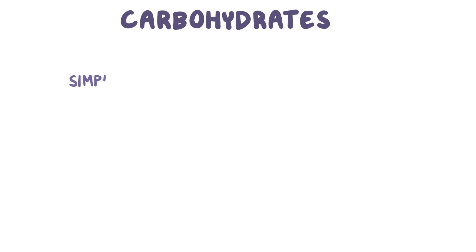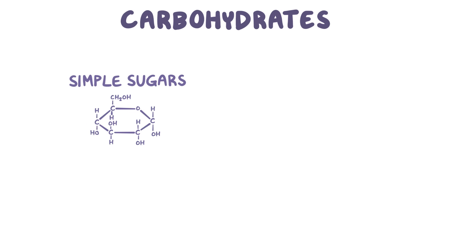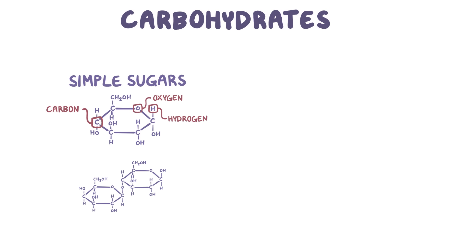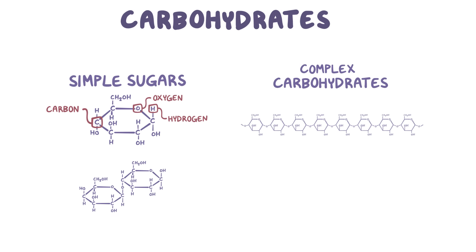Carbohydrates include both simple sugars, which are little ring-shaped molecules made of carbon, hydrogen, and oxygen, either alone or in pairs, as well as more complex carbohydrates, which are formed when these rings link up together to make long chains.